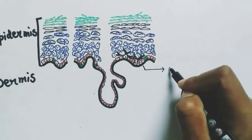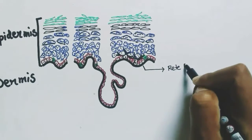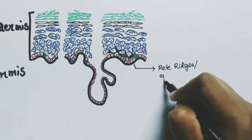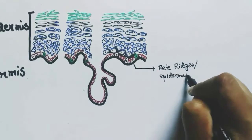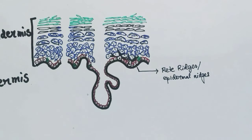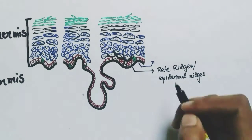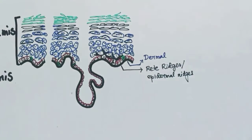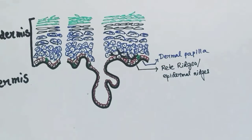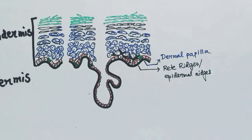The finger-like projections of the epidermis towards the dermis are called rete ridges or epidermal ridges, and the finger-like projections of the dermis towards the epidermis are called the dermal papilla.